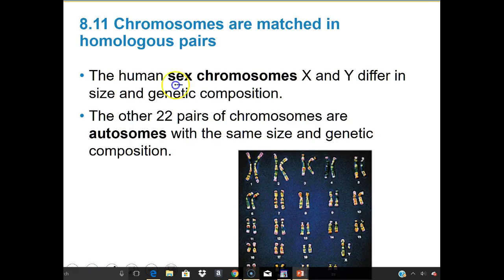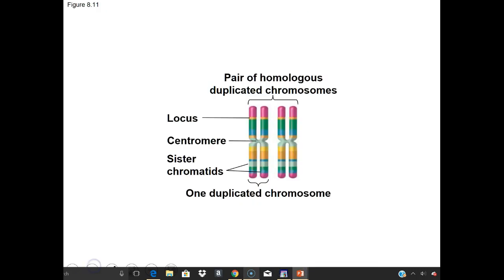The human sex chromosomes, X and Y, differ in size and genetic composition. The other 22 pairs of chromosomes are called autosomes — 'auto' meaning self — chromosomes related to the self, with the same size and genetic composition. Each chromosome in a homologous pair contributes to a complete set.